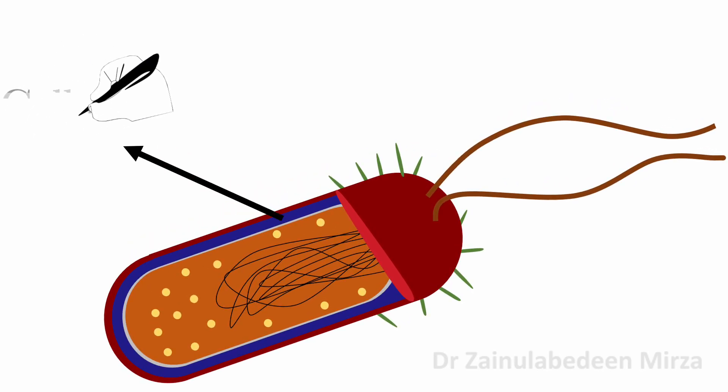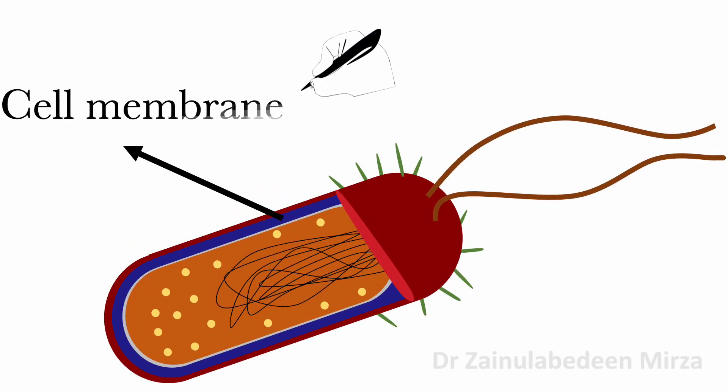The cell membrane is also found in prokaryotic cells, and it surrounds the cell cytoplasm. The cell membrane regulates the flow of substances in and out of the cells.